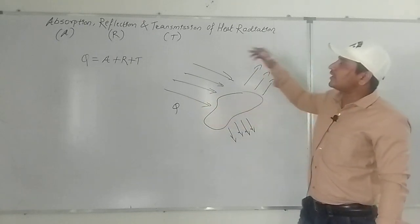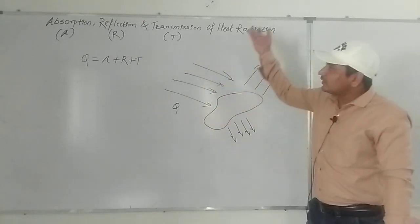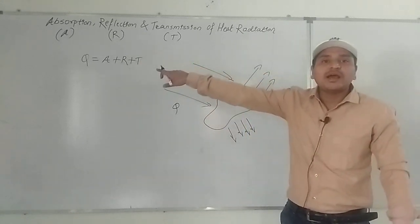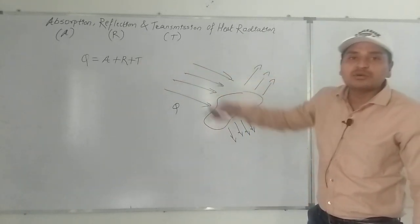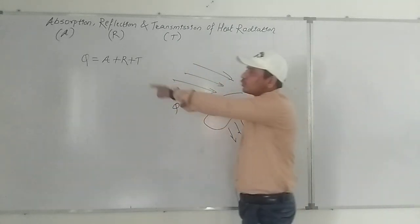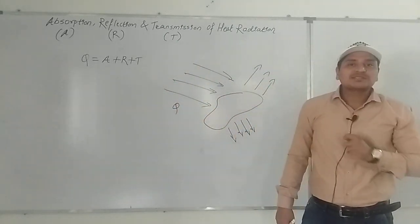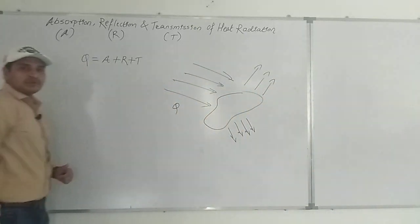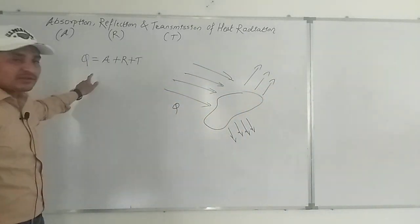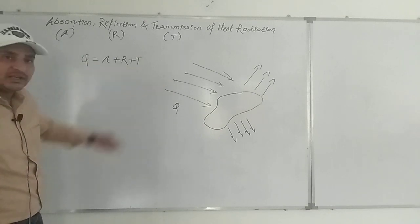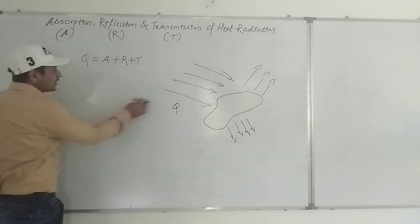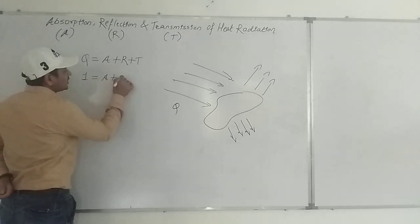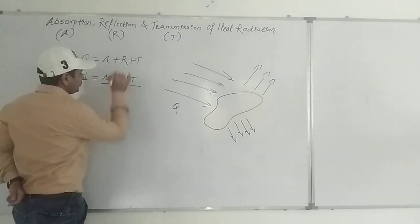T is denoted for transmit, R is denoted for reflect, and A is denoted for absorb. The equation is Q is equal to A plus R plus T.